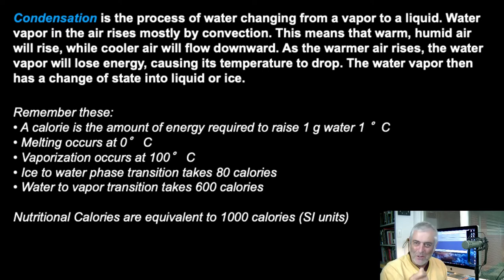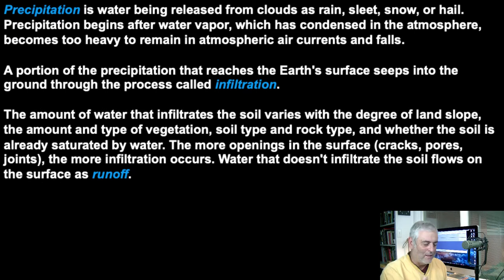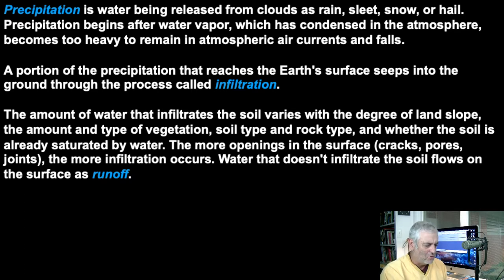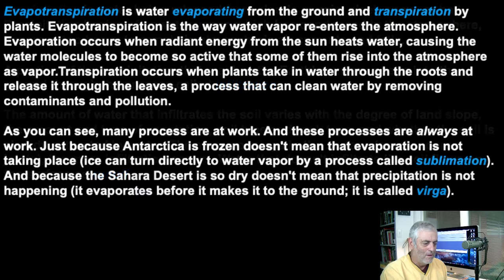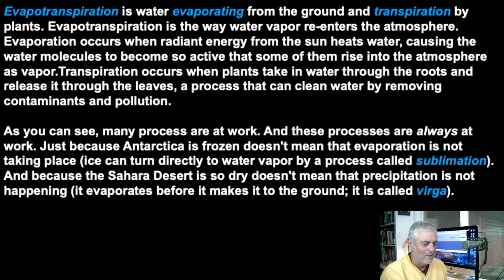Precipitation is pretty obvious — snow, ice, rain. Infiltration is where water soaks into the ground when it's not saturated; if it's saturated, all the pore spaces already contain water and runoff becomes the result, collecting into rivulets that make their way to a creek. Sublimation is when ice goes directly to a vapor phase — like dry ice releasing CO₂ vapor. Virga is when rain falls from clouds but evaporates before reaching the surface — you can actually see the rain make a U-turn in the sky and return as water vapor.